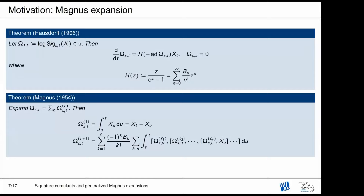If you try to compute the logarithm of the signature, it's not easy, but you can do it by solving an associated ODE — the Magnus (Hausdorff) ODE. You get a modified vector field, no longer linear, where the vector field in front is given by the Bernoulli numbers. Then Magnus shows in '54 that if you decompose in tensor levels, you can recursively compute your solution. It lives in the free Lie algebra generated by the X's — d generators — and you get a very explicit formula. Now we would like to do the same when X is actually a stochastic process or semi-martingale.